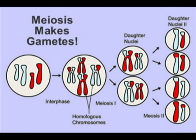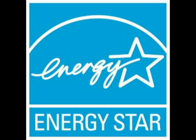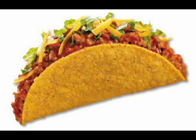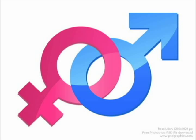Because asexual reproduction does not require the formation of gametes, often in separate individuals, and bringing them together for fertilization, it occurs much faster than sexual reproduction and requires less energy. Asexual lineages can increase their numbers rapidly because all members can reproduce viable offspring.